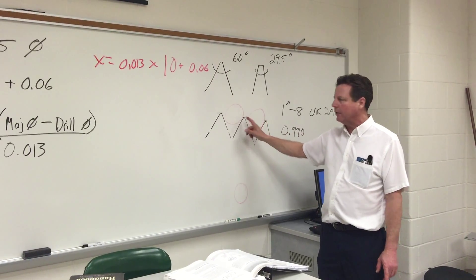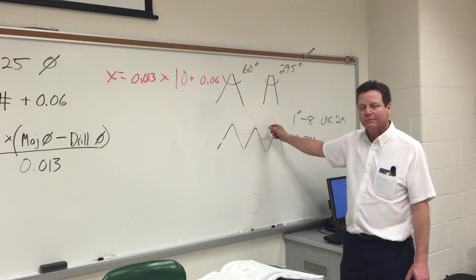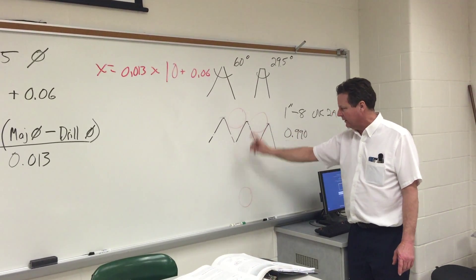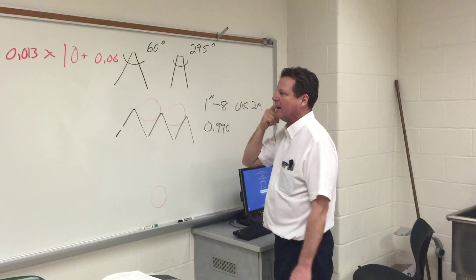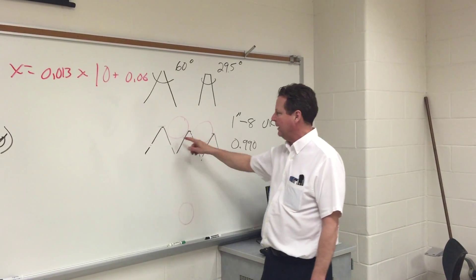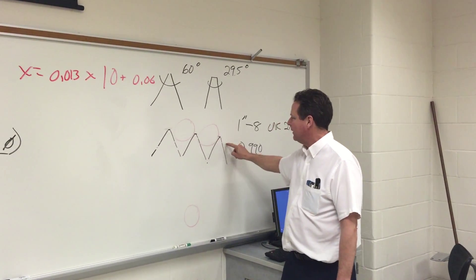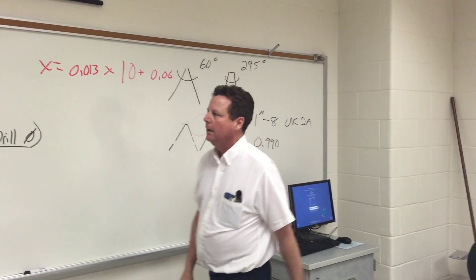This drawing shows how you will measure unified threads over wires. You put three equal diameter wires over the part, mic over the top of it, subtract a constant, and then cut to the pitch diameter, which is that theoretical diameter going right through the middle of the thread.